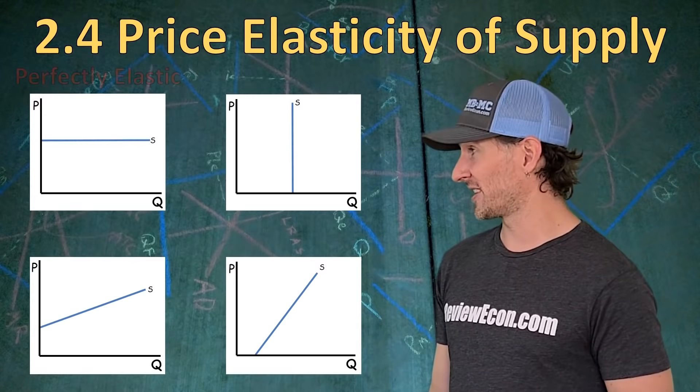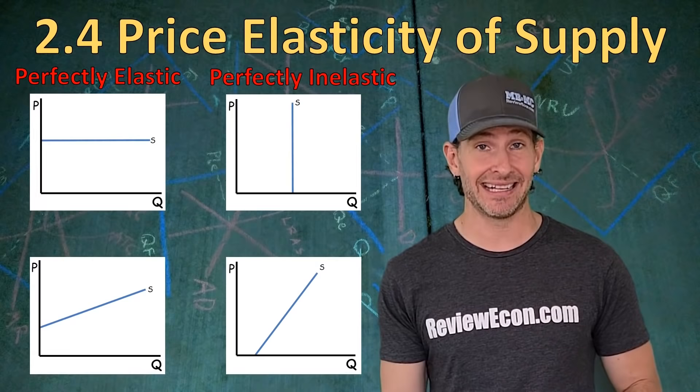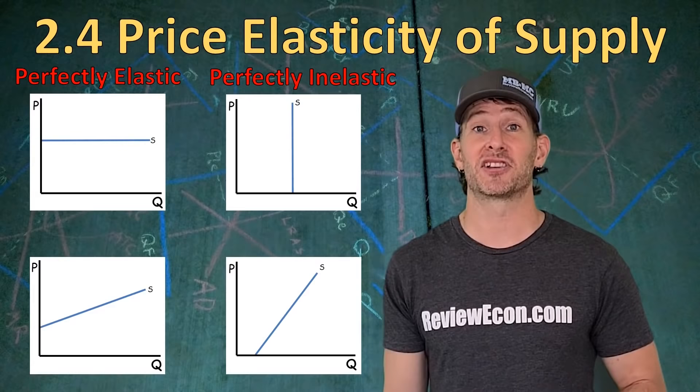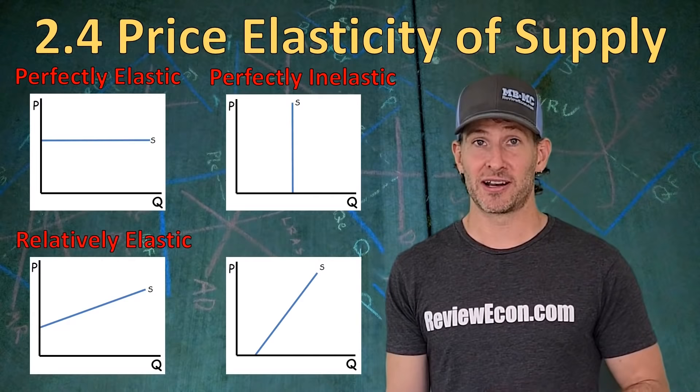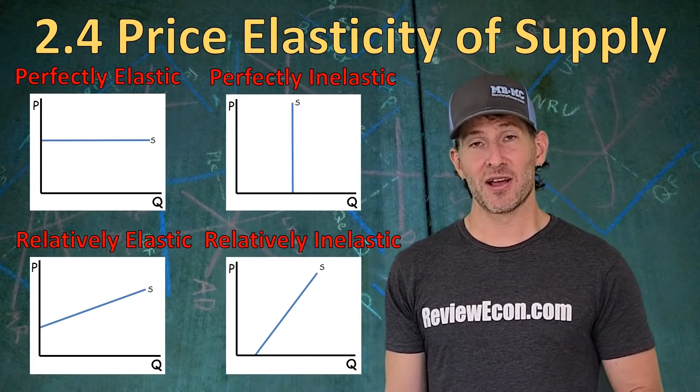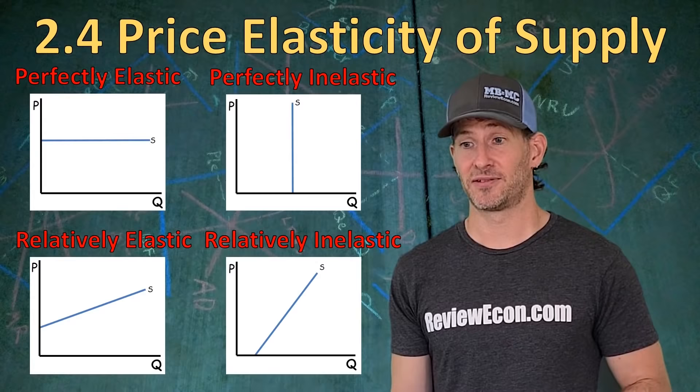Visually: perfectly elastic supply is a horizontal curve with a coefficient of infinity; perfectly inelastic supply is a vertical curve with a coefficient of zero. A relatively elastic supply curve is more horizontal than vertical, and a relatively inelastic supply curve is more vertical than horizontal — similar to what we saw with demand curves.